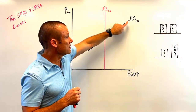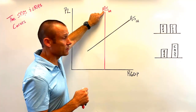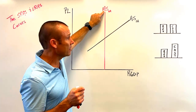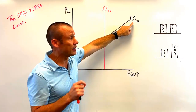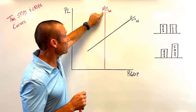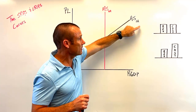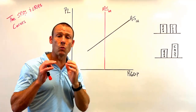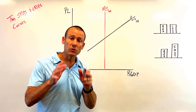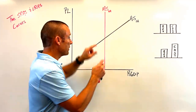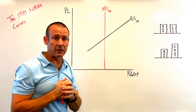One thing I want you to see right off the bat is that I've renamed these two curves. Instead of calling them the LRAS and the SRAS, I'm calling them the ASLR and the ASSR. I'm doing that so students understand that we basically have two aggregate supply curves.